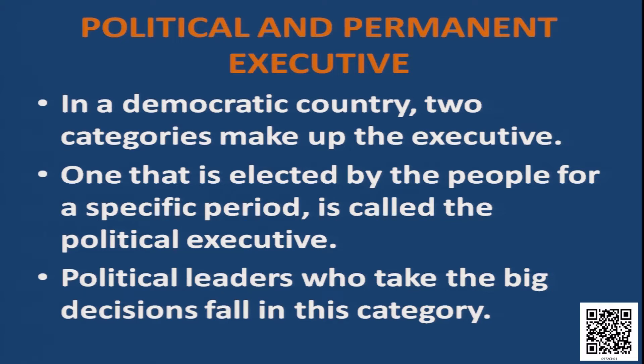In a democratic country, there are two categories of executive: one is political, and another is permanent executive. The one that is elected by the people for a specific period of time is called the political executive. These executives are elected for a fixed, specific period. Political leaders who take the decisions fall in this category — that is called the political executive.